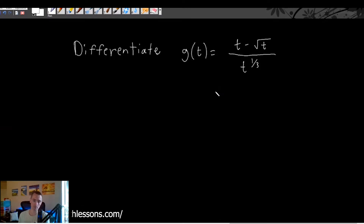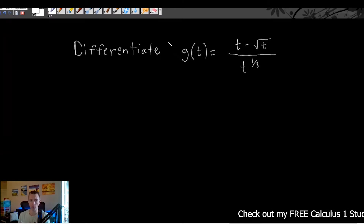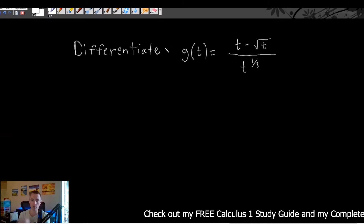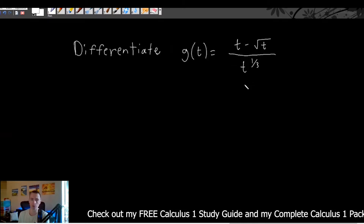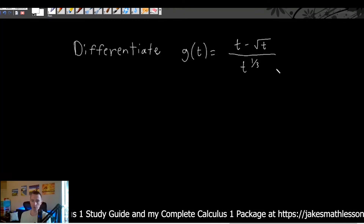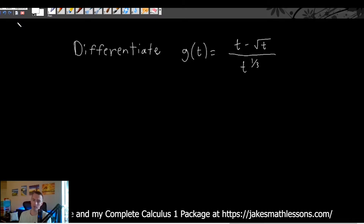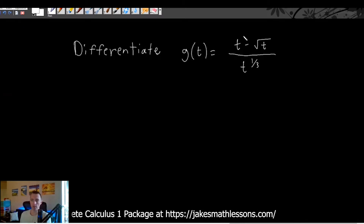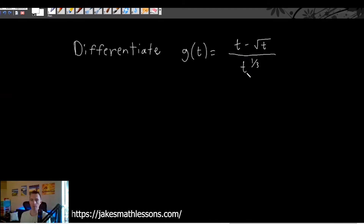You could definitely use quotient rule and you'd be right to do so. However, we can also use this exact same example to get practice with product rule, and you'd find you get the exact same result. There is an important step we need to take before applying product rule, because right now we don't have a product — we need to do some rearranging. To apply product rule you need one function times another function, and we don't have that yet.